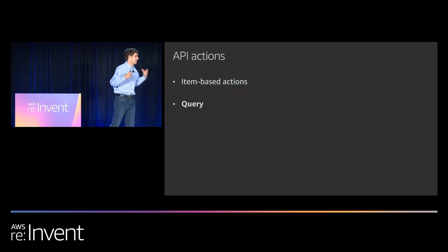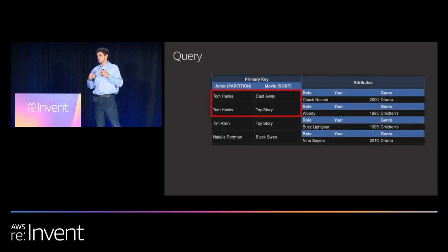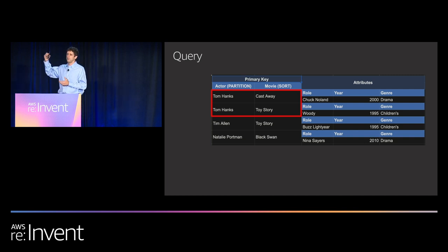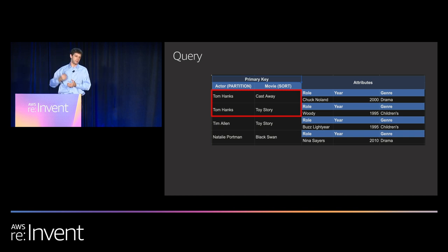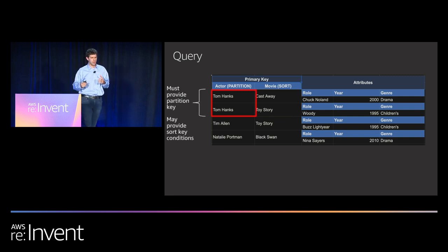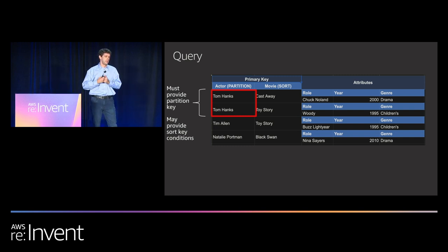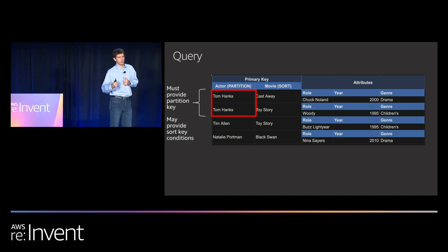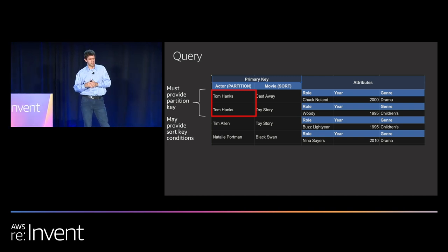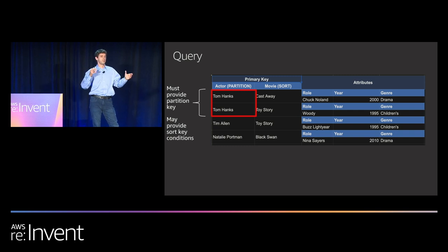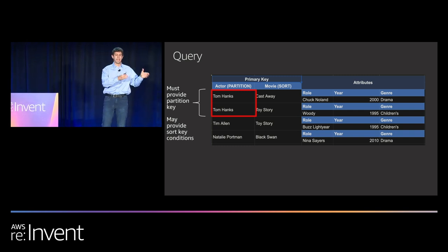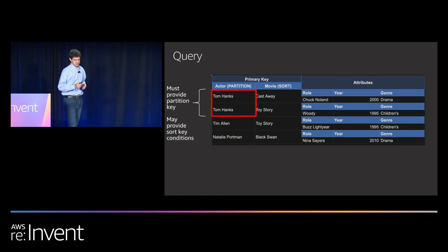The second bucket is the query action — a read-only action that lets you fetch multiple items in a single request. You must provide the partition key; you can optionally provide sort key conditions. So you can say give me all Tom Hanks movies with no conditions, or give me all Tom Hanks movies where the title is between A and M in the alphabet — that gives you Castaway but not Toy Story.